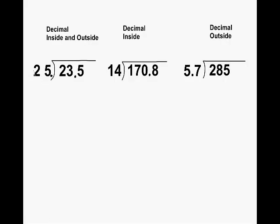So 2.5 in this example becomes 25. And what you do to the outside, the rule says you have to do the same thing to the inside. So taking a look here, we have 23.5 and we are going to take that decimal and move that all the way to the right as well. And then we move the decimal straight up.